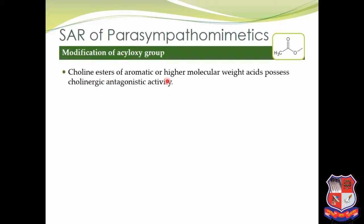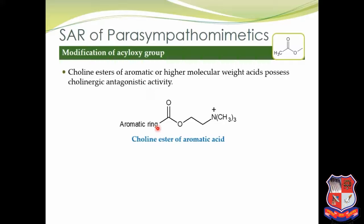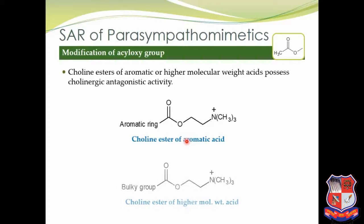Polyene esters of aromatic or higher molecular weight acids possess cholinergic antagonistic activity. Acetylcholine is a polyester — if instead of acetic acid we introduce an aromatic ring, that is called a polyene ester of an aromatic acid; if we introduce bulky groups, that is a polyene ester of higher molecular weight acids. In both cases, increased molecular weight gives antagonistic activity.